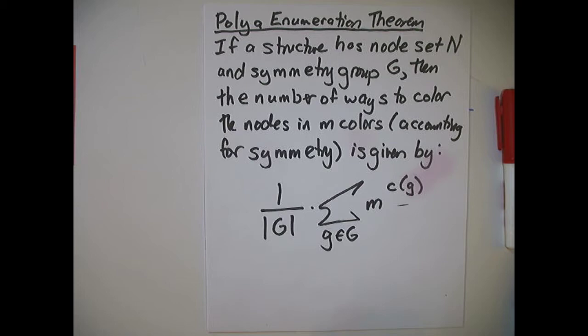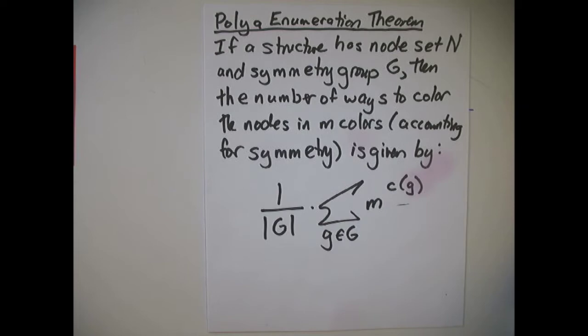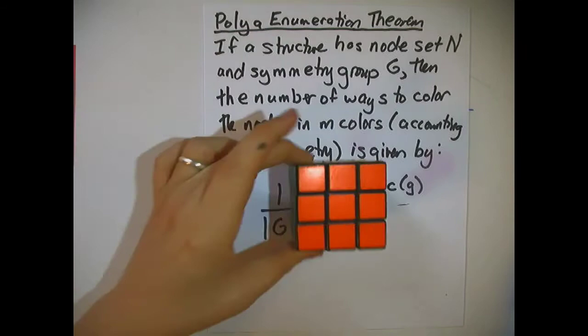So now we have the Pólya enumeration theorem. We've answered completely the question about necklaces. In this video, I'm going to use the Pólya enumeration theorem to count the number of ways to color the faces of a cube.